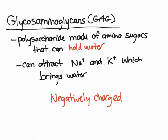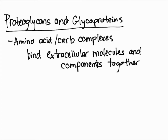Next, let's talk about proteoglycans and glycoproteins. These are amino acid and carbohydrate molecules put together — essentially half amino acid and half carbs. What they do is bind extracellular molecules and components together, so they just hold things together. Notably, all three ground substance molecules — GAGs, proteoglycans, and glycoproteins — are amino acid and carb based, which gives ground substance its gel-like consistency.